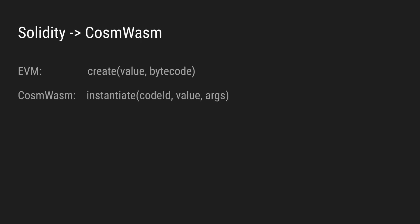It starts from the opcode definitions. The EVM CREATE opcode receives the funds or value assigned at creation, and the EVM deployment bytecode. The instantiate function in CosmWasm requires the code ID of a previously deployed WASM contract.